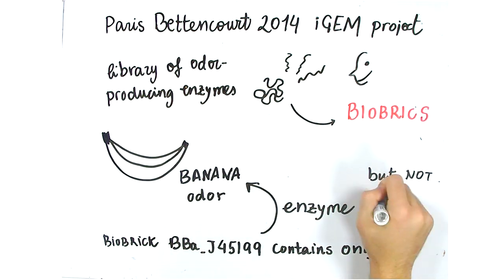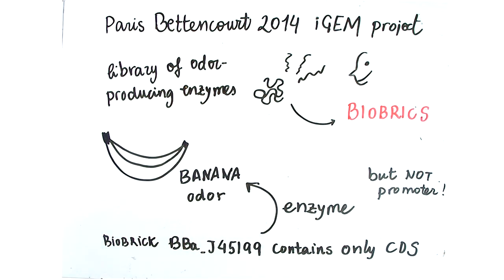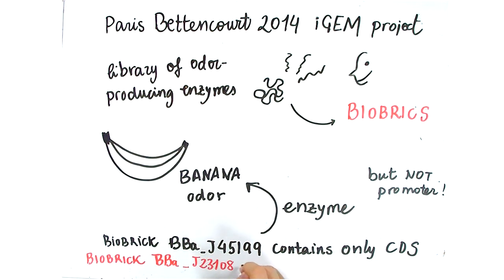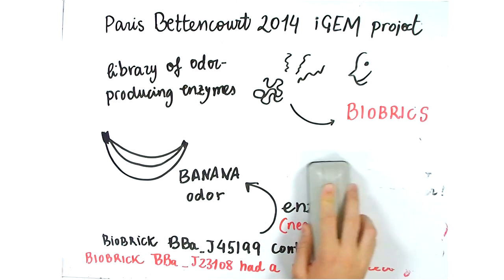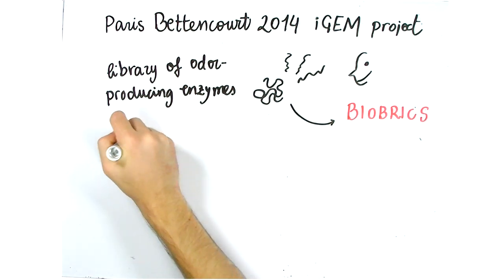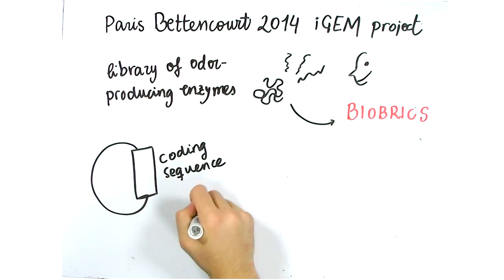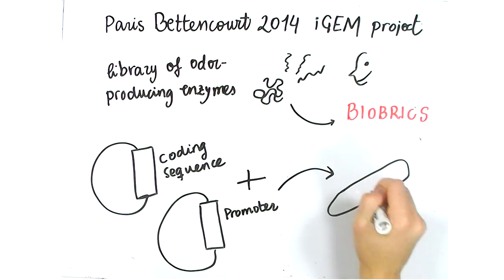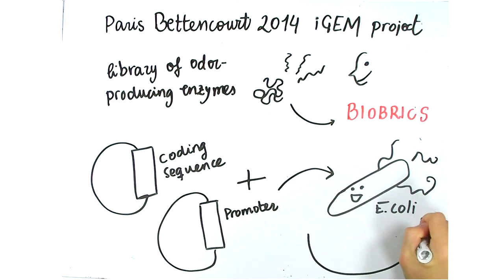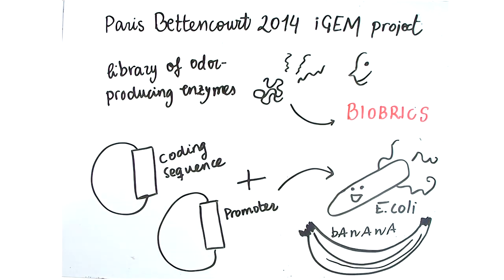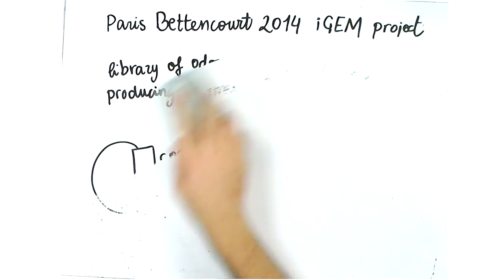This biobrick, however, did not have a promoter to allow for the transcription of this enzyme. Therefore, we found another promoter, also from the parts registry, and cloned the promoter upstream of the enzyme. This way, we could design a genetic device that had a promoter and our gene of interest and clone this into an E. coli in order to successfully create an E. coli culture that smelled like bananas. Using these tools that are freely available to anyone, you too can start designing your own biobricks and assembling available biobrick parts into genetic devices and circuits.